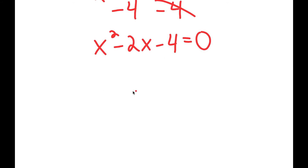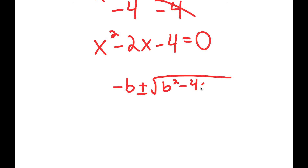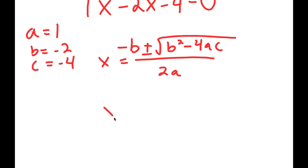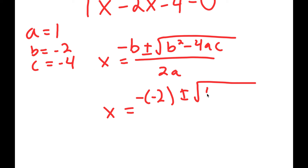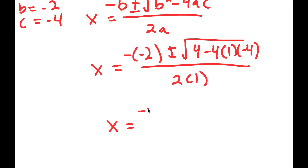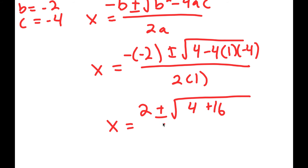Now, to solve this, I'm going to use the quadratic formula, which is negative b plus or minus the square root of b squared minus 4ac, all over 2a. So in this case, a is equal to 1, b is equal to negative 2, and c is equal to negative 4. So I get x is equal to negative of negative 2 plus or minus the square root of negative 2 squared, which is 4, minus 4 times 1 times negative 4, all over 2 times 1.